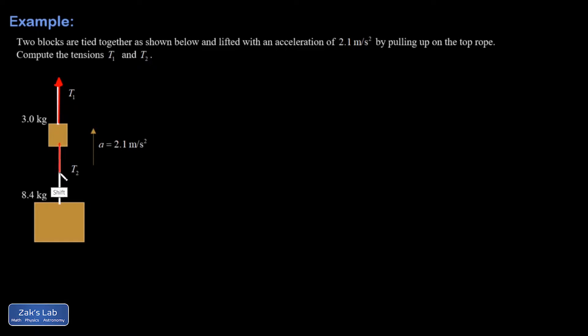That string T2 pulls down on the top block. In addition to that you have the weight of that top block, so that's mg or 3 times 9.8. I get 29.4 newtons for that. There's no problem with putting numbers into a force diagram if you have room.